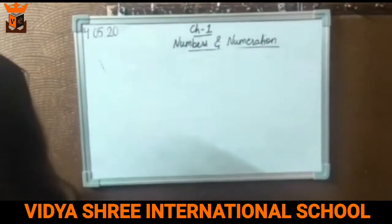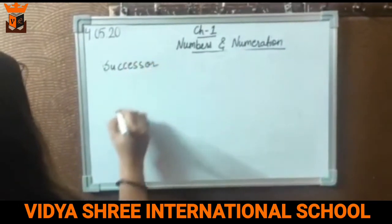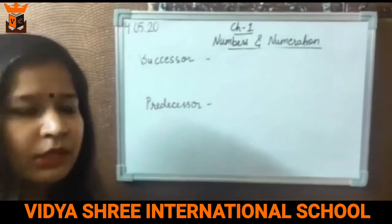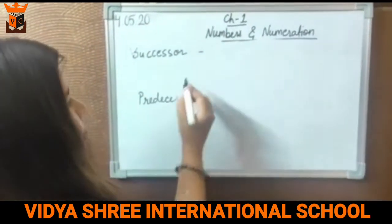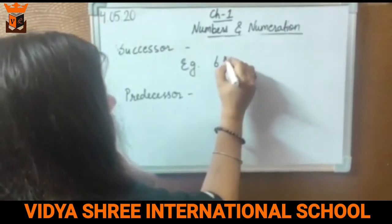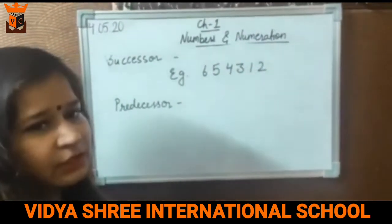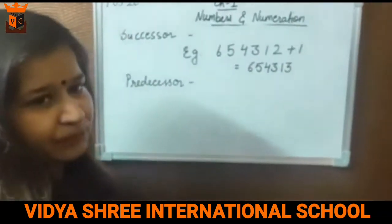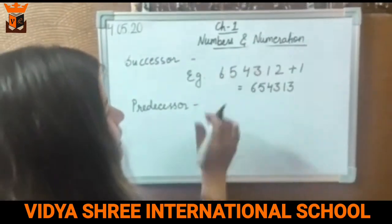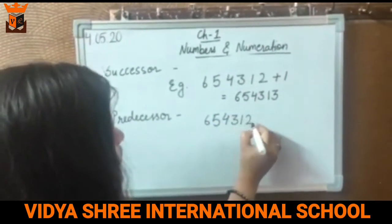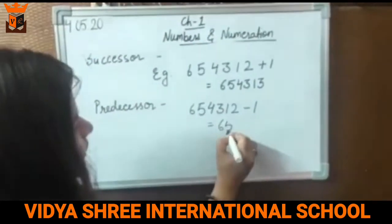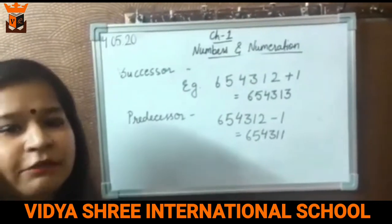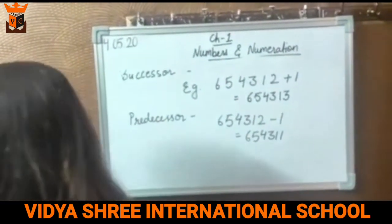Our second topic is successor and predecessor. Successor means the number that comes after the given number, and predecessor means the number that comes before the given number. Suppose I take the example 654312 — to find the successor, just add 1 to get 654313. To find the predecessor, just subtract 1 to get 654311. To find the successor we always add 1, and to find the predecessor we subtract 1 from the given number.